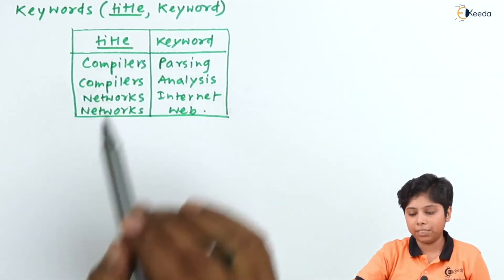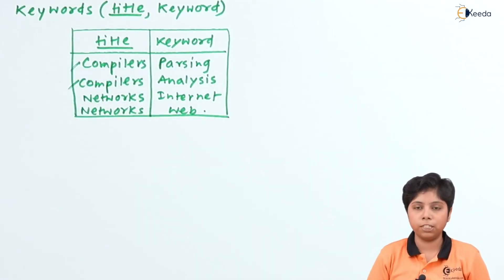Here also I have made title as the primary key, but it is repeating in two of the tuples. So I will also need a multi-valued attribute as a part of the complex attribute on an object-based database, whereas we cannot if it is in a relational schema.